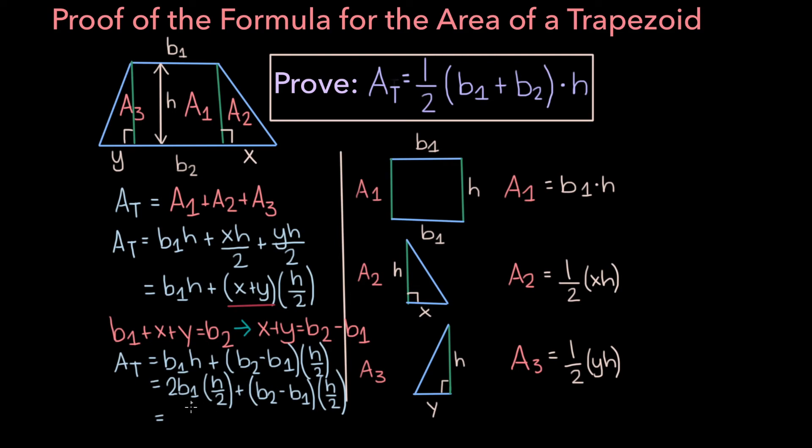Now we can factor out the h over 2 from both terms, and then on the inside we would have 2b1 plus b2 minus b1. And now if we do some rearranging and simplification, this becomes one half b1 plus b2 times h. And so here you have one way to prove the formula for the area of a trapezoid.